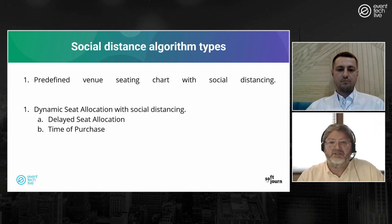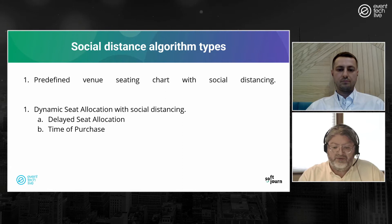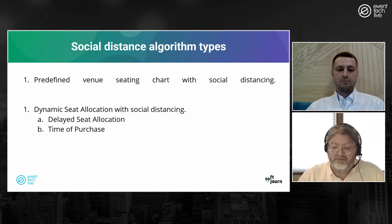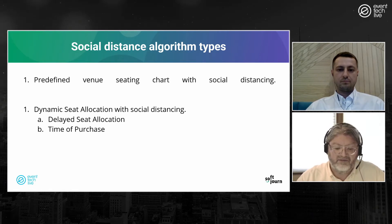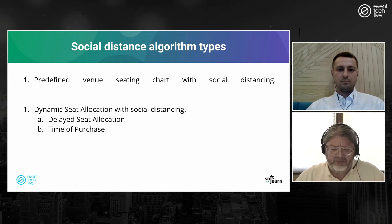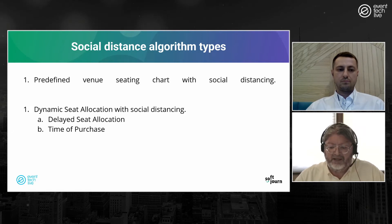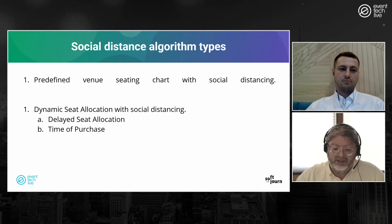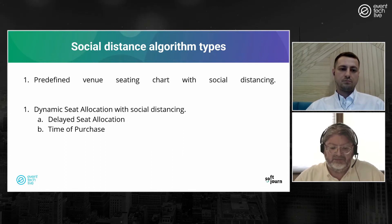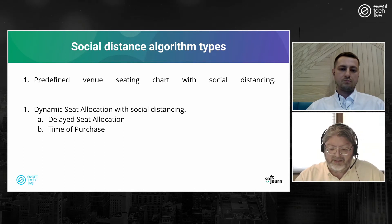Some capacity is defined by local regulations, which can vary widely as to how many people you're actually allowed to have at an event — 20 to 25 percent seems to be the average, at least from what I've seen. We're also going to talk about more dynamic ways that social distance seating can be done, partly to maximize capacity.